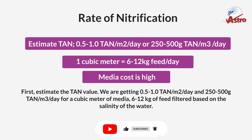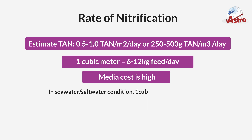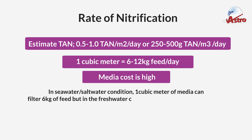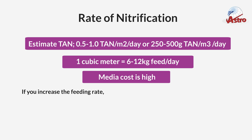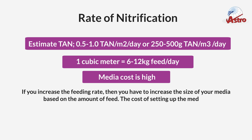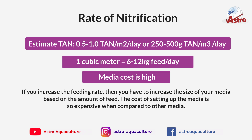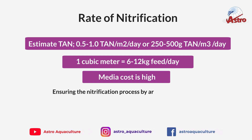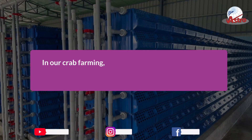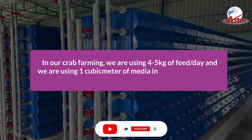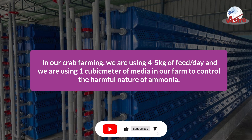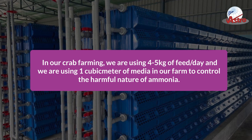Based on the salinity of the water: in seawater or saltwater conditions, one cubic meter of media can filter 6 kilograms of feed, but in freshwater conditions it filters up to 12 kilograms of feed. If you increase the feeding rate, you have to increase the size of your media. The cost of setting up the media is expensive compared to other media. In our crab farming, we use 4 to 5 kilograms of feed per day with one cubic meter of media.